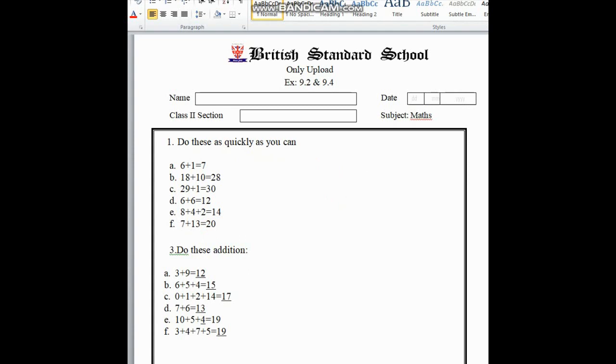In number 3, here is do this addition. We have to solve this by doing addition. Here is 3 plus 9. If we add 3 with 9 we get 12. Next here is 6 plus 5 plus 4. All the digits stand in the ones place. If we add 6 plus 5 we get 11, and if we add 11 with 4 we get 15. In this way you can solve numbers 1 and 3.